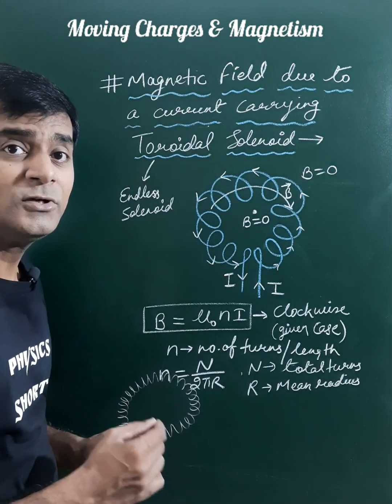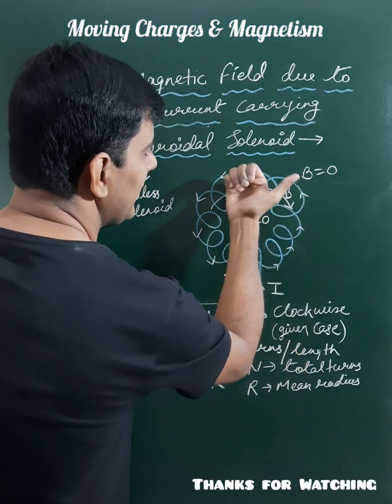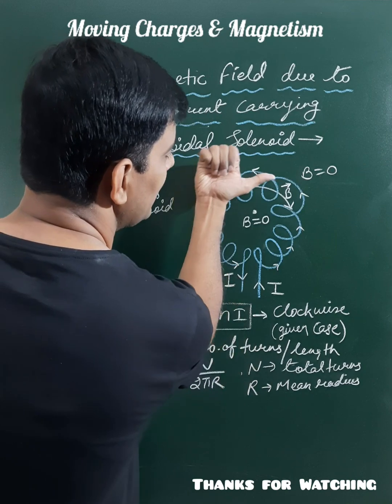The direction of magnetic field in this situation where the current is flowing like this, the magnetic field direction will be clockwise direction.